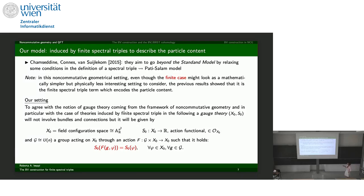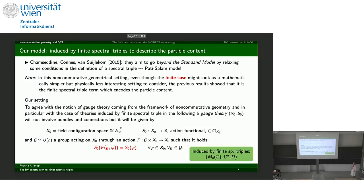In the model I will consider, the gauge theory's configuration space is an affine space, the action functional is a regular function over that configuration space, and the gauge group is U(N). This is precisely the gauge theory one constructs by applying the recipe derived from a finite spectral triple over a matrix algebra.